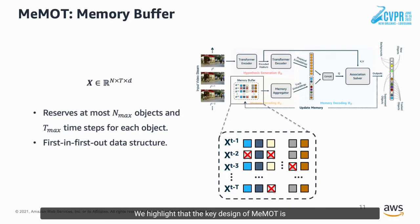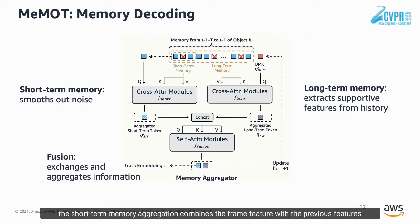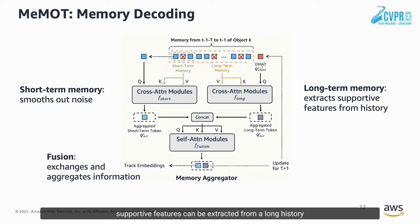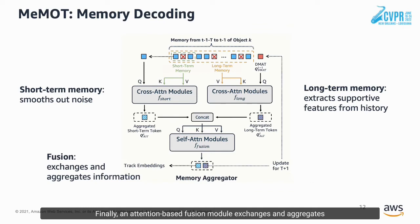The key design of MAMOT is to build a large spatial-temporal memory that stores past observations. In memory decoding, the short-term memory aggregation combines the frame feature with the previous feature to smooth the results and reduce noise. In addition, supportive features can be extracted from a long history to reacquire tracks after long periods of occlusion. Finally, an attention-based fusion module exchanges and aggregates the information from both branches to update the track embeddings.